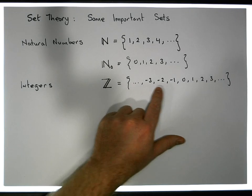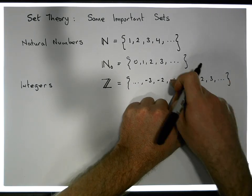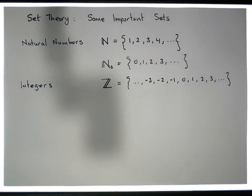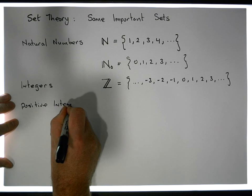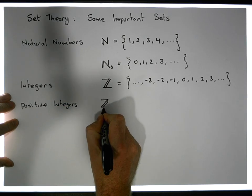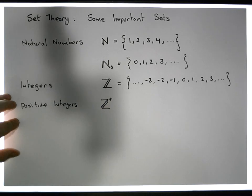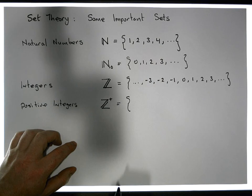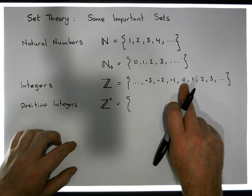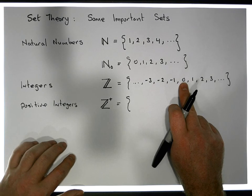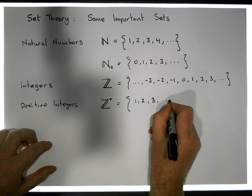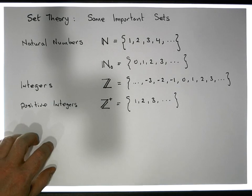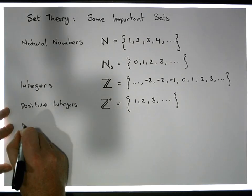The integers include the natural numbers, all of their negative counterparts, and zero. Then we have the positive integers, symbolized by Z with a superscript plus. The positive integers, by definition, are the natural numbers — keep in mind that zero is neither positive nor negative — so the positive integers are one, two, three, and so on, which is the same as the natural numbers.